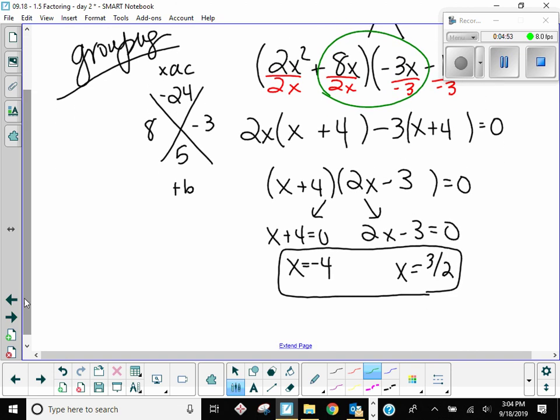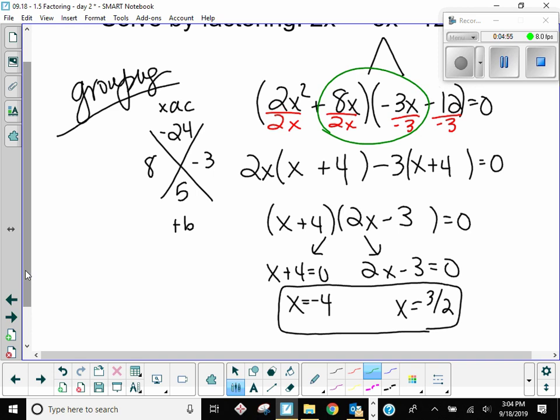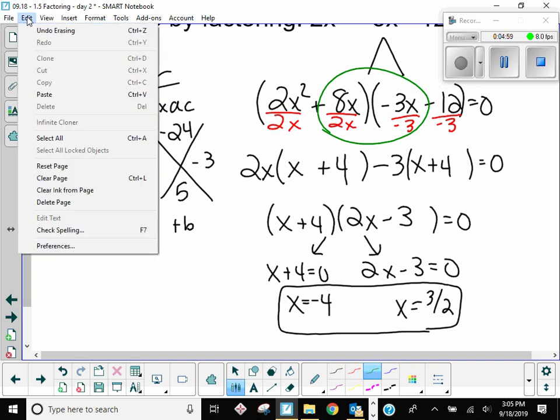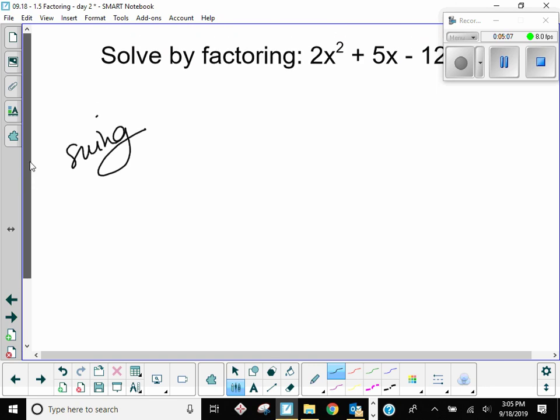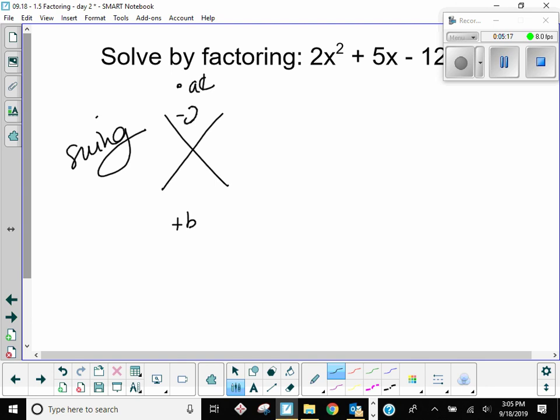All right, so a good, solid method takes a long time. Here's the swing method. Starts out the same. What multiplies to AC and adds to B. So AC is negative 24, B is 5. We said 8 and negative 3, when I put B.